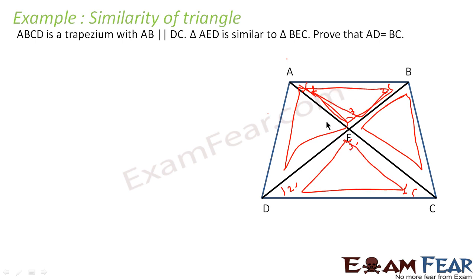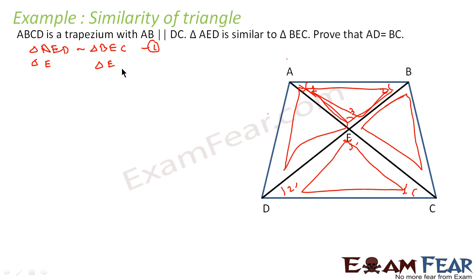So we have two pairs of similar triangles. One pair is triangle AED similar to triangle BEC — that is given. Also, these two triangles are similar, so we will take angle E here. If we take angle A here, we take angle C there; if we take angle B here, it equals angle D. So these two triangles are also similar.